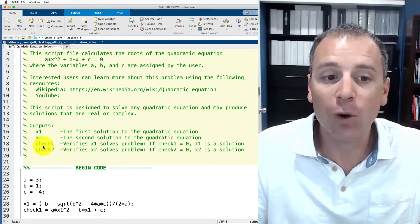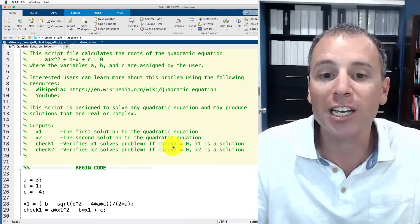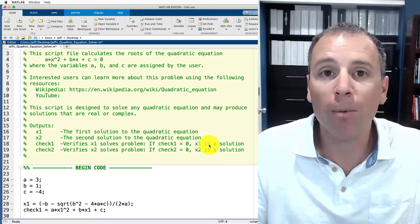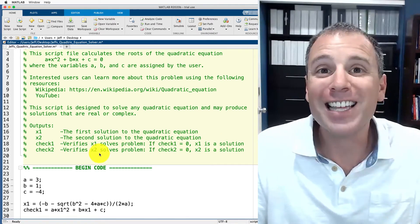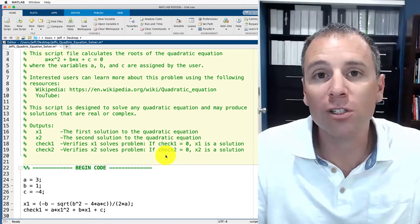What does check one do? This verifies that x1 solves the problem that we're interested in. In other words if check one is zero, x1 is a solution to our problem. Check two verifies that x2 solves the problem. If check two is zero, x2 is a solution.